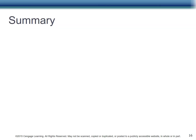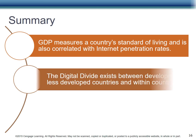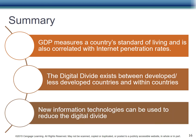To summarize: GDP measures a country's standard of living and is also correlated with internet penetration rates. The digital divide exists between developed and less developed countries, and within countries, including the U.S. New information technologies can be used to reduce the digital divide, most likely the cell phone.